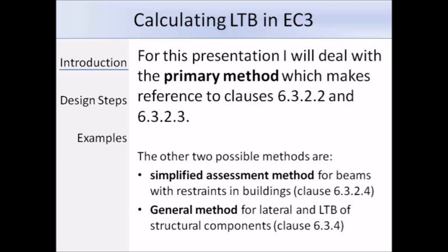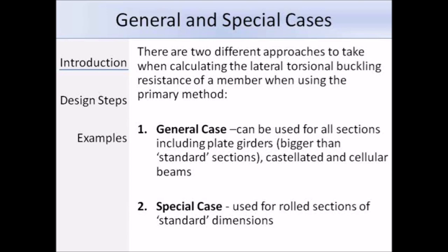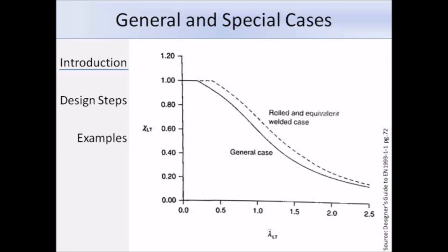When it comes to working out the values of certain parameters needed to work out the LTB resistance of a member, there are two cases which need to be considered. The first case is the general case and that can be used for all sections. The second case, which I shall refer to as the special case in this presentation, can only be used for rolled sections.